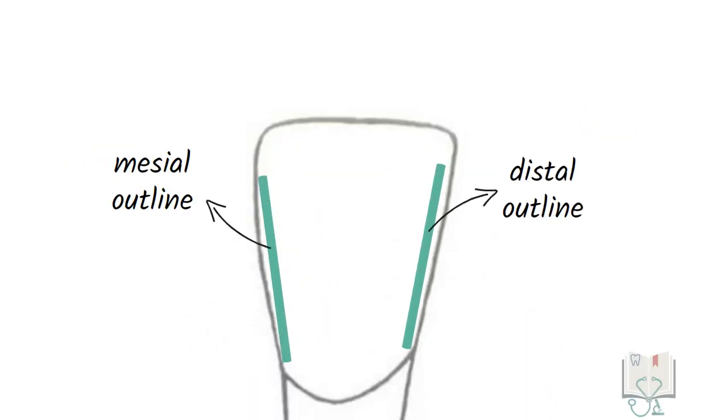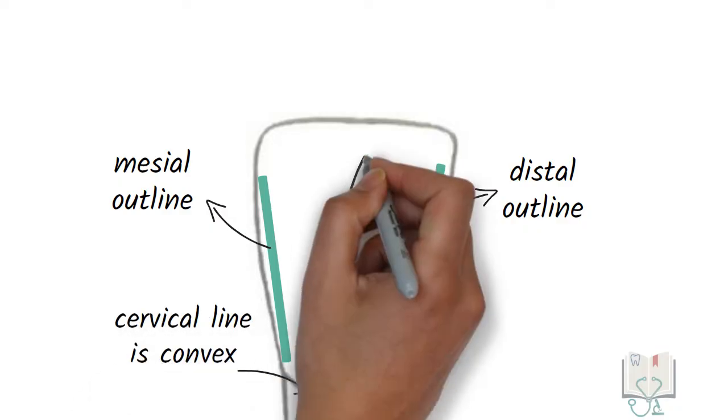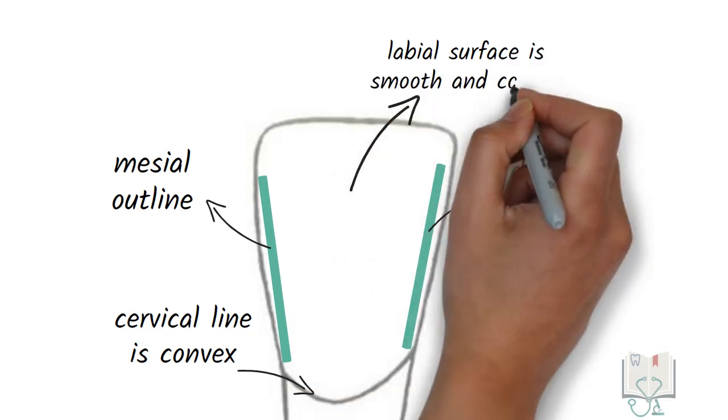Both mesial outline and distal outline converge towards the cervix. The cervical line is convex with its convexity towards the root. The labial surface is smooth and convex.